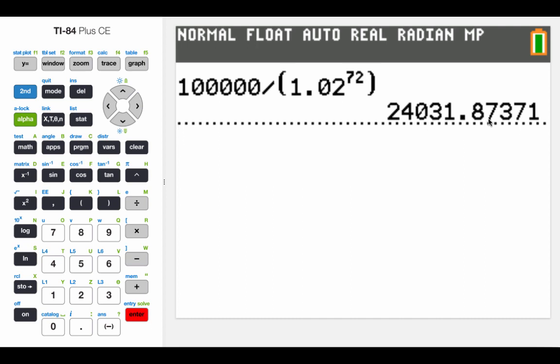So after 18 years of growth, if we want to end up with $100,000 using the constraints that we were given, we need to start with just over $24,000.